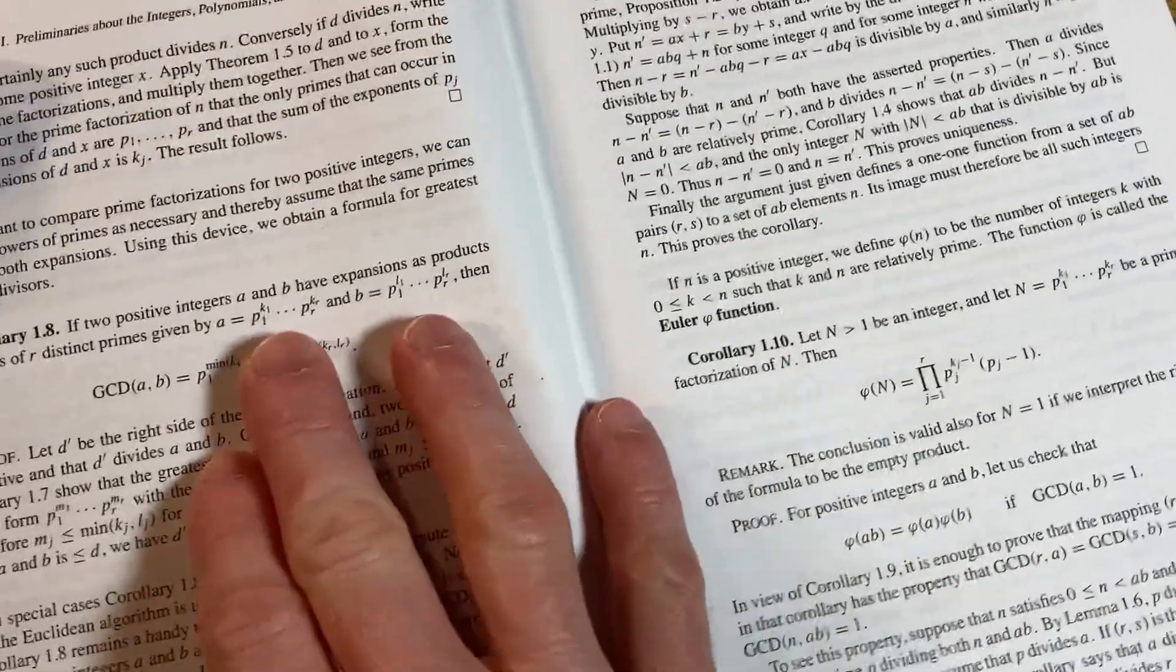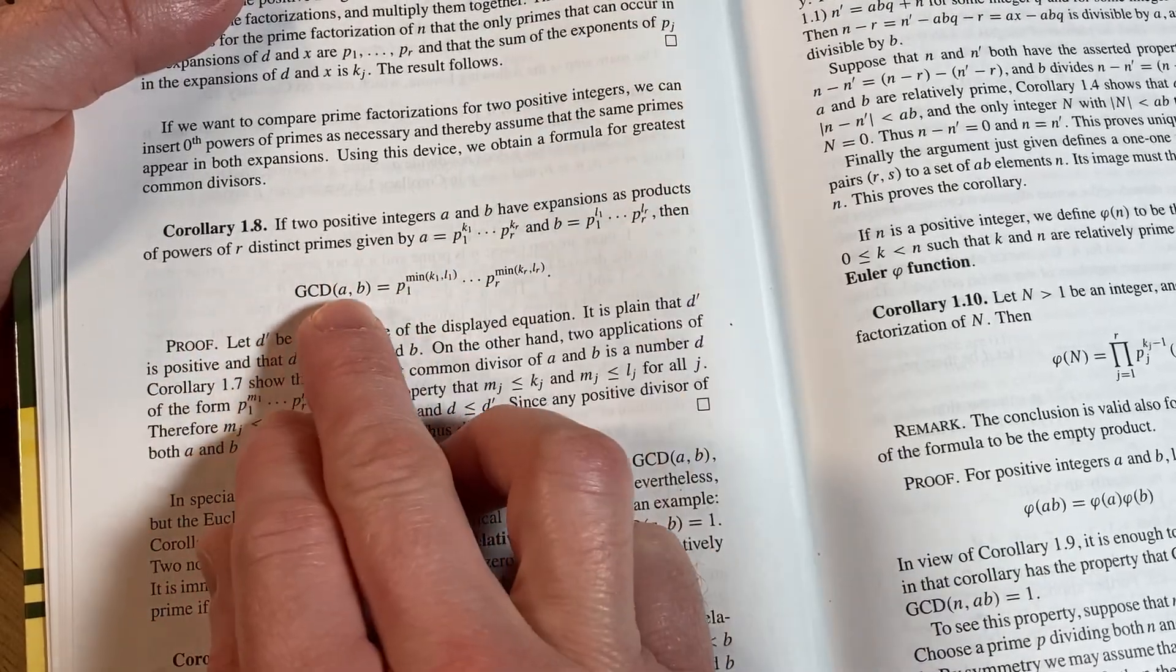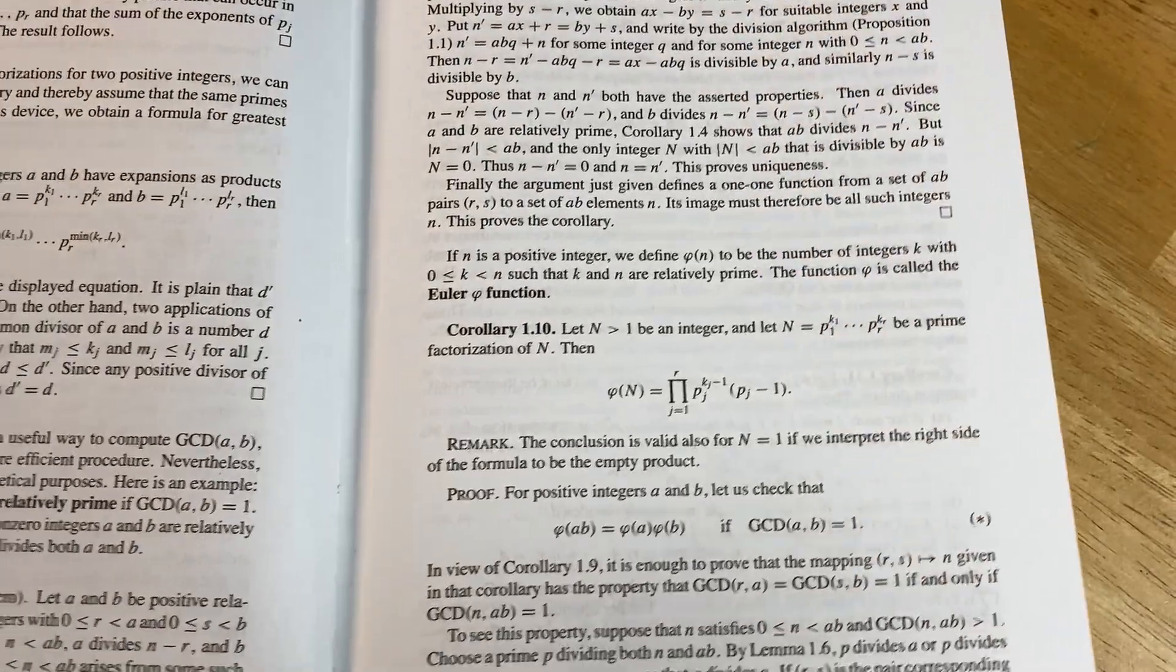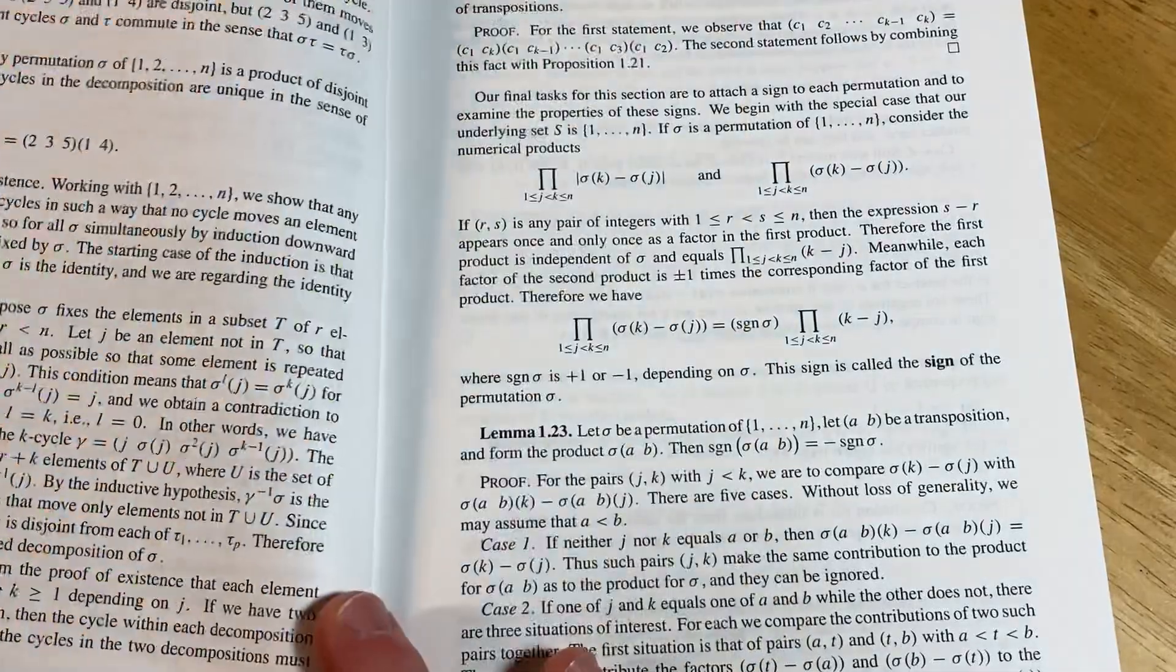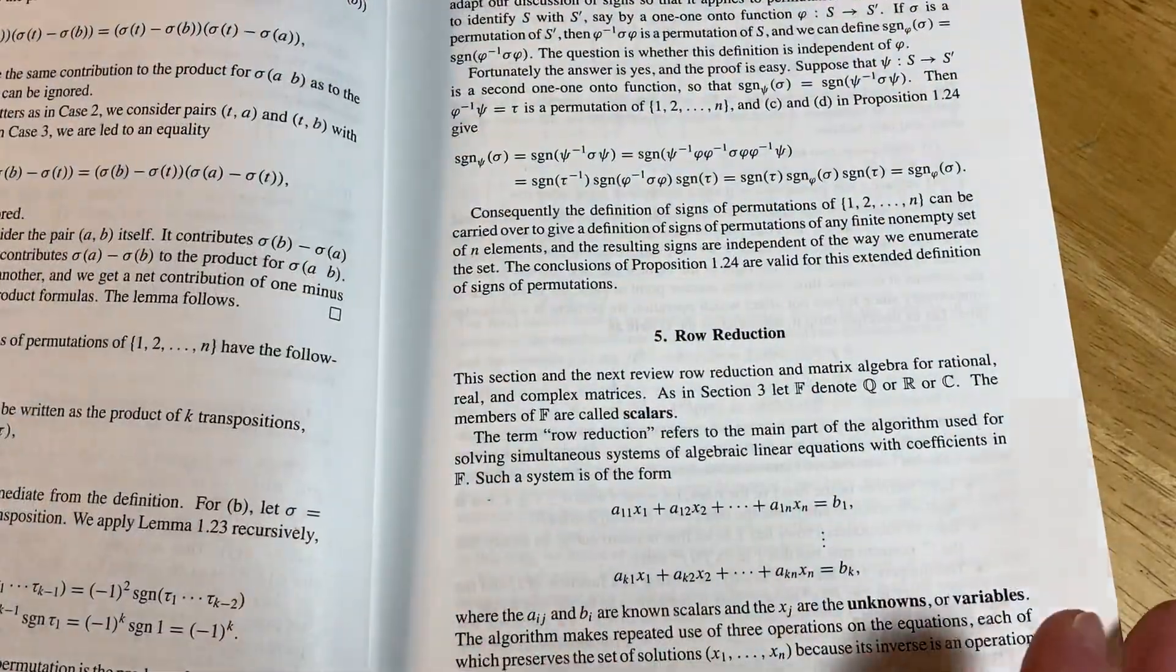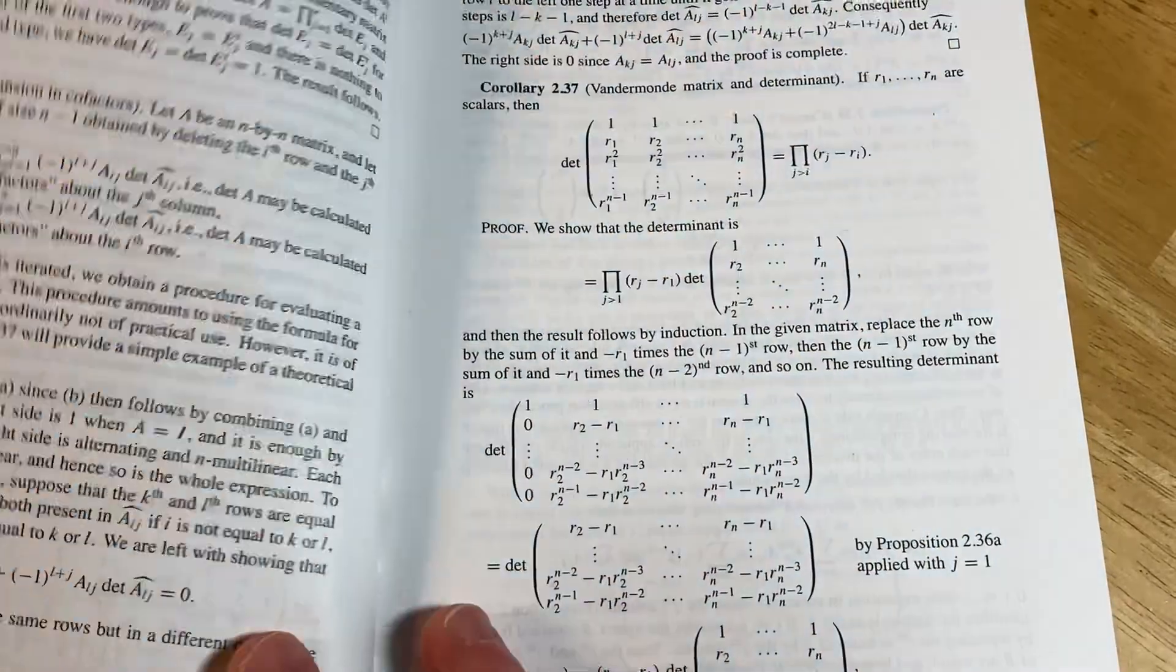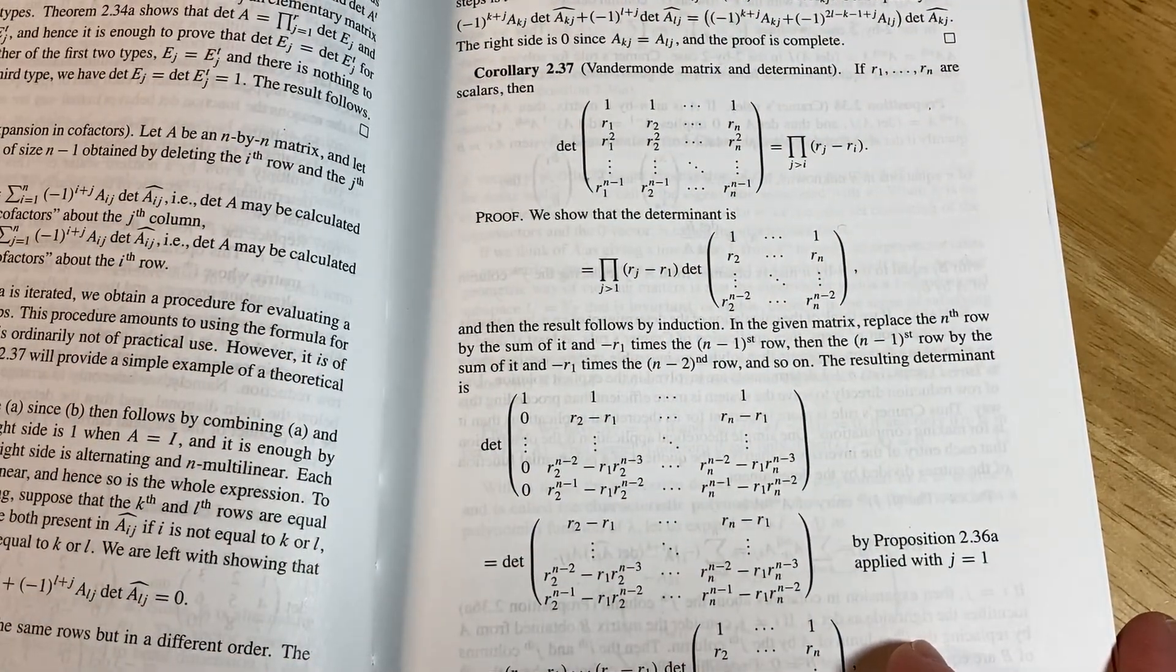If two positive integers a and b have expansions as products of powers of primes, then the GCD of a and b is... that's cool. So obviously you want to know how to write proofs before jumping into a book like this. And you want to have, honestly I think you should have a course in abstract algebra. That's just my opinion. I don't think this is for beginners.